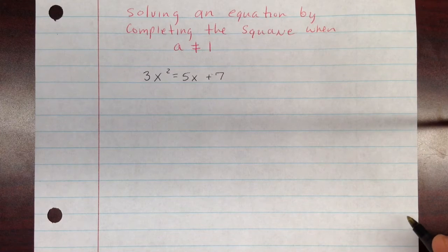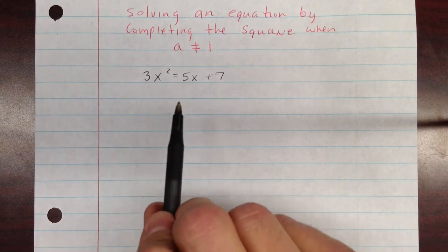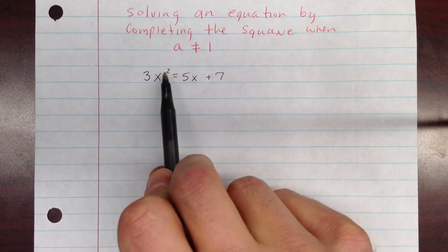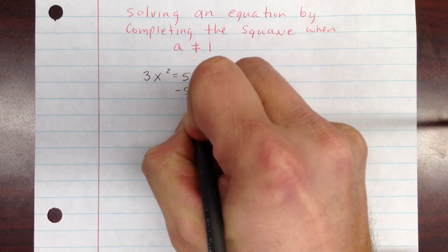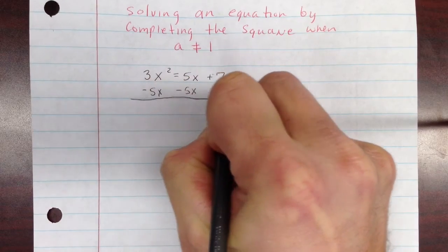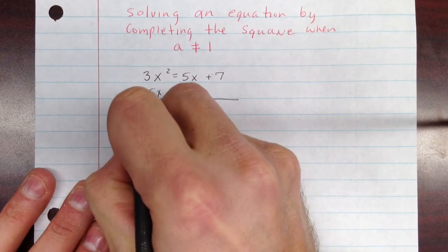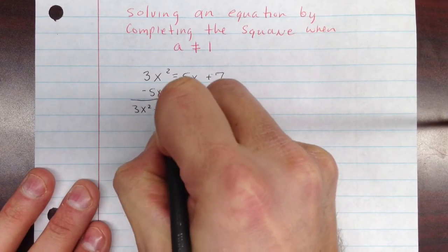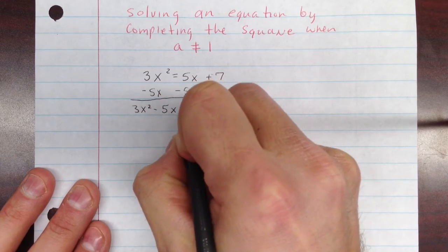But to start, the first thing we do is get it so the constants on the right side and the x terms on this side. So we're going to subtract 5x from both sides to start that process off. And that gives us 3x squared minus 5x equals 7.